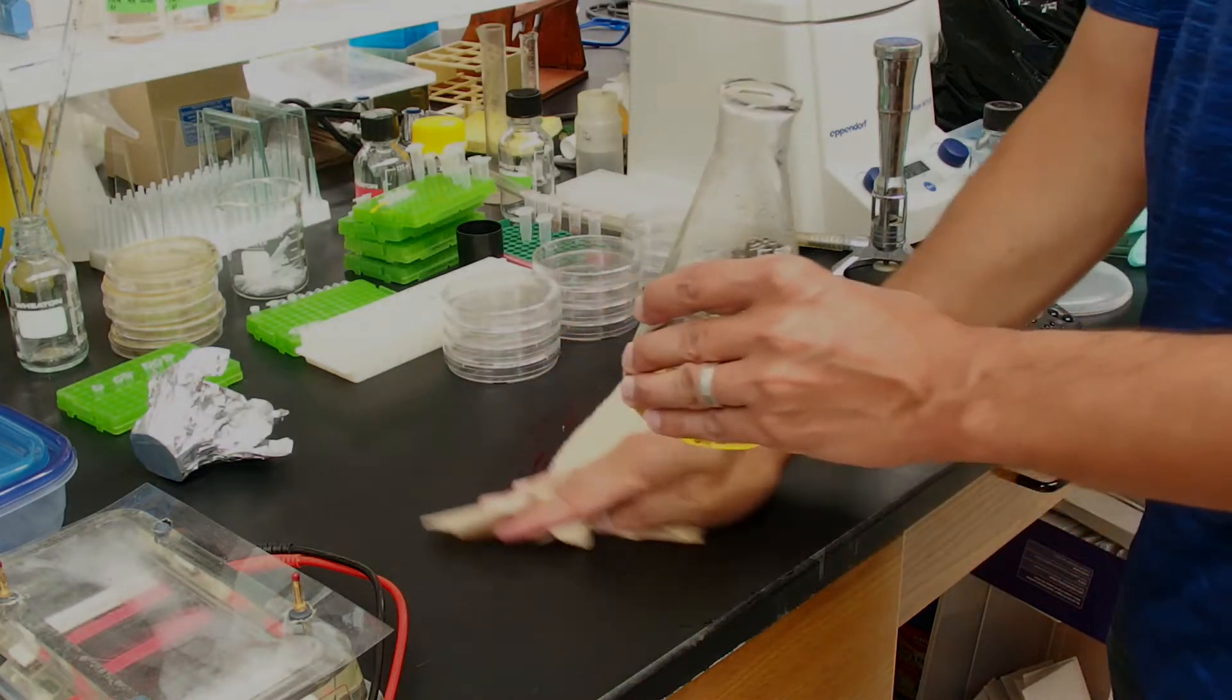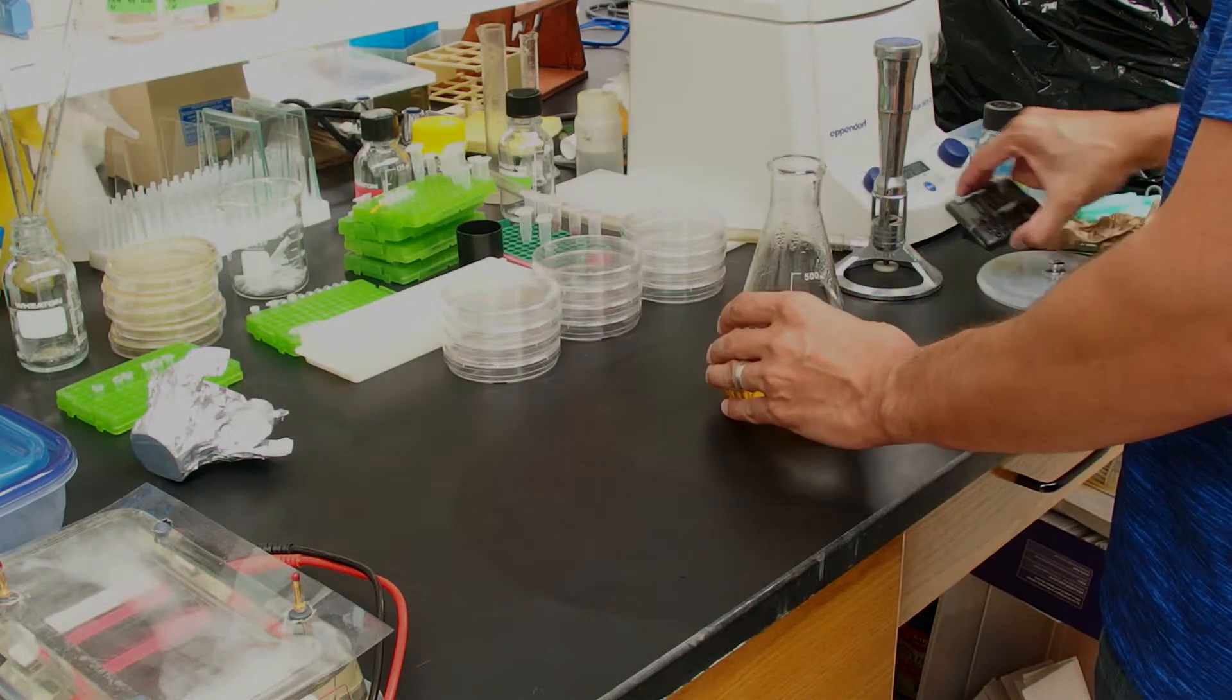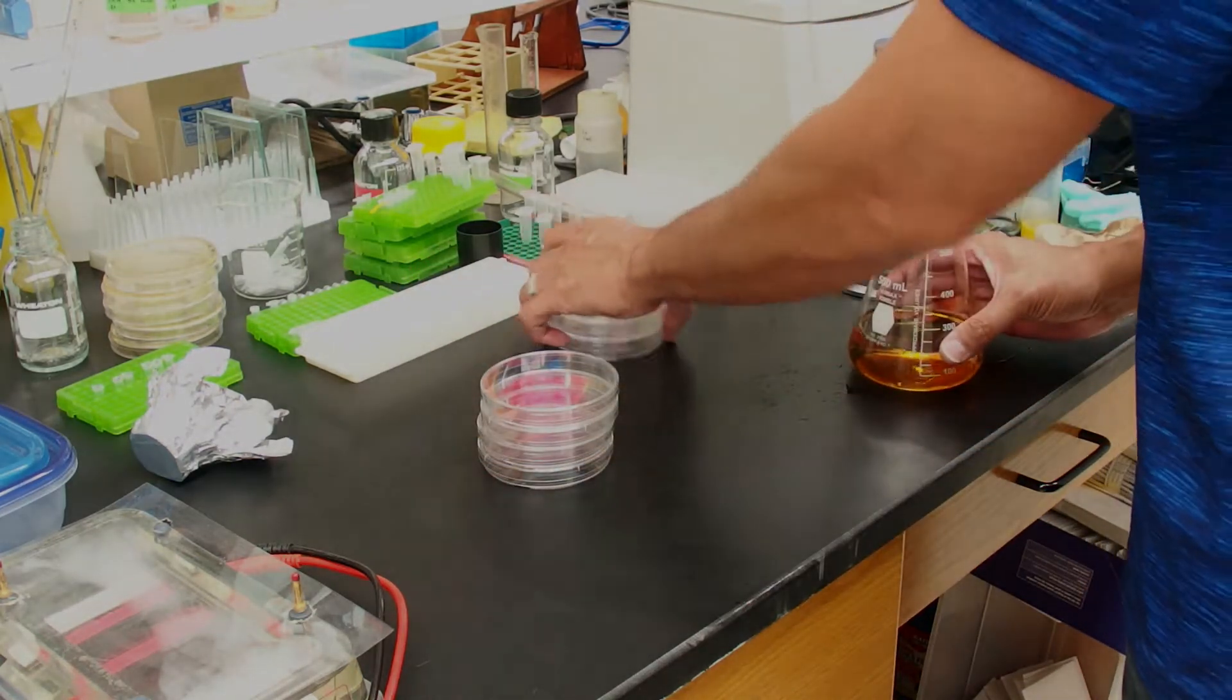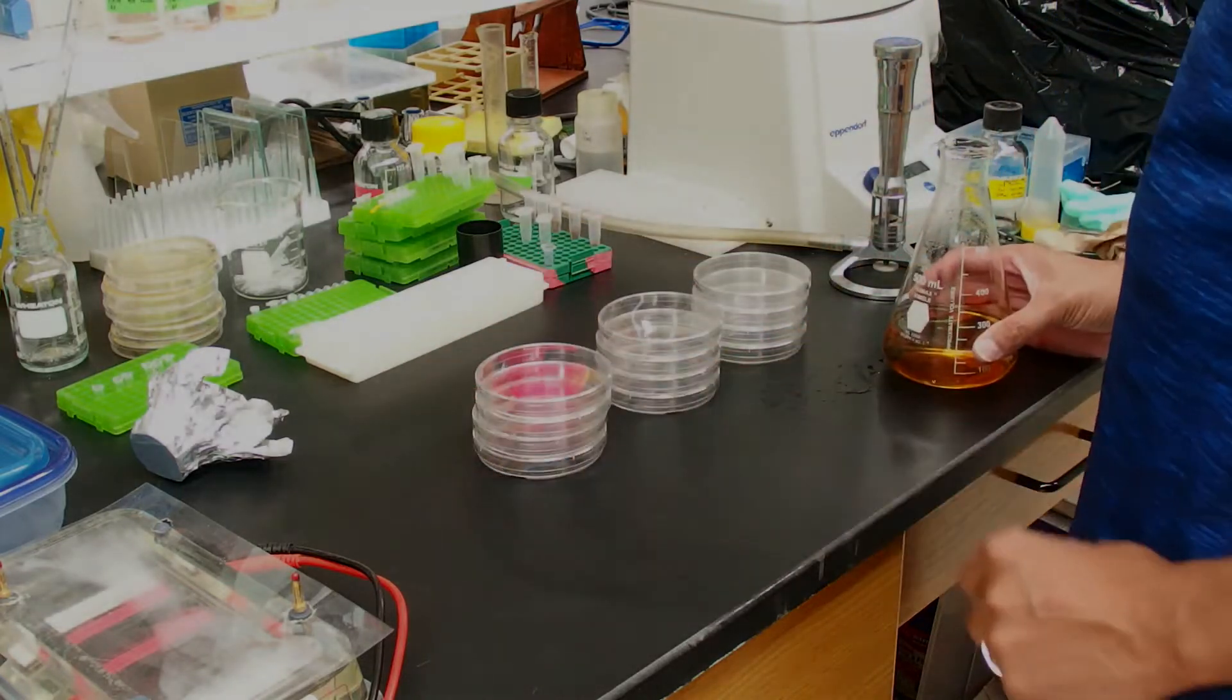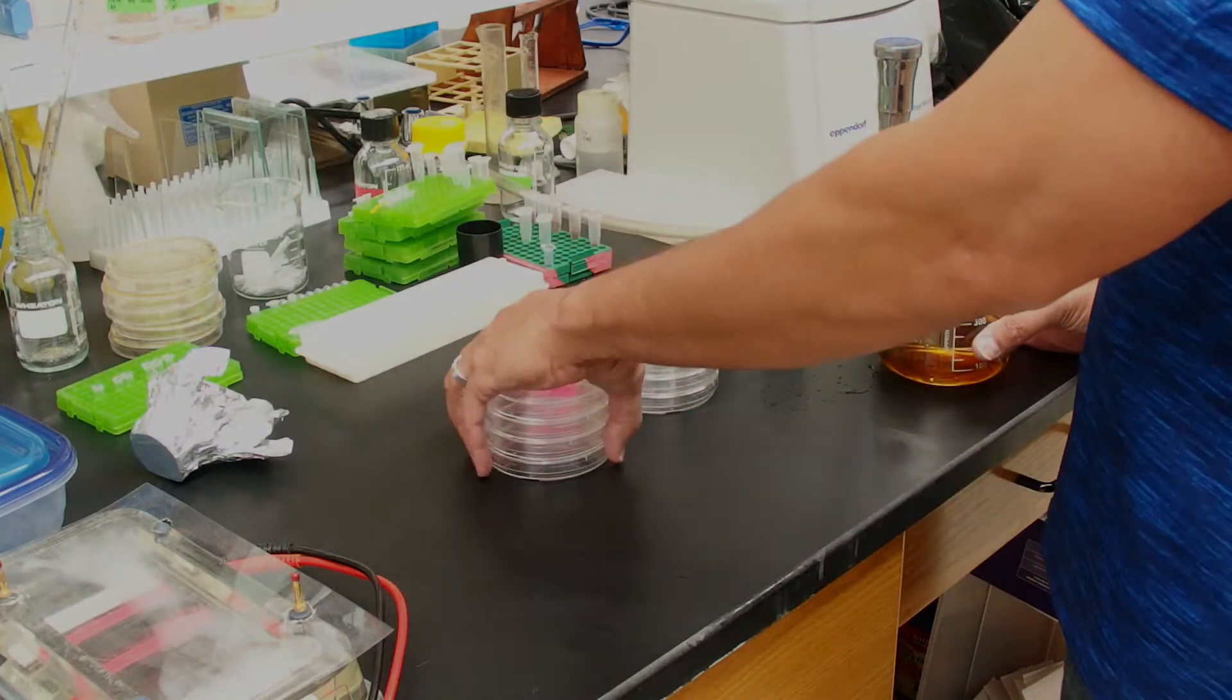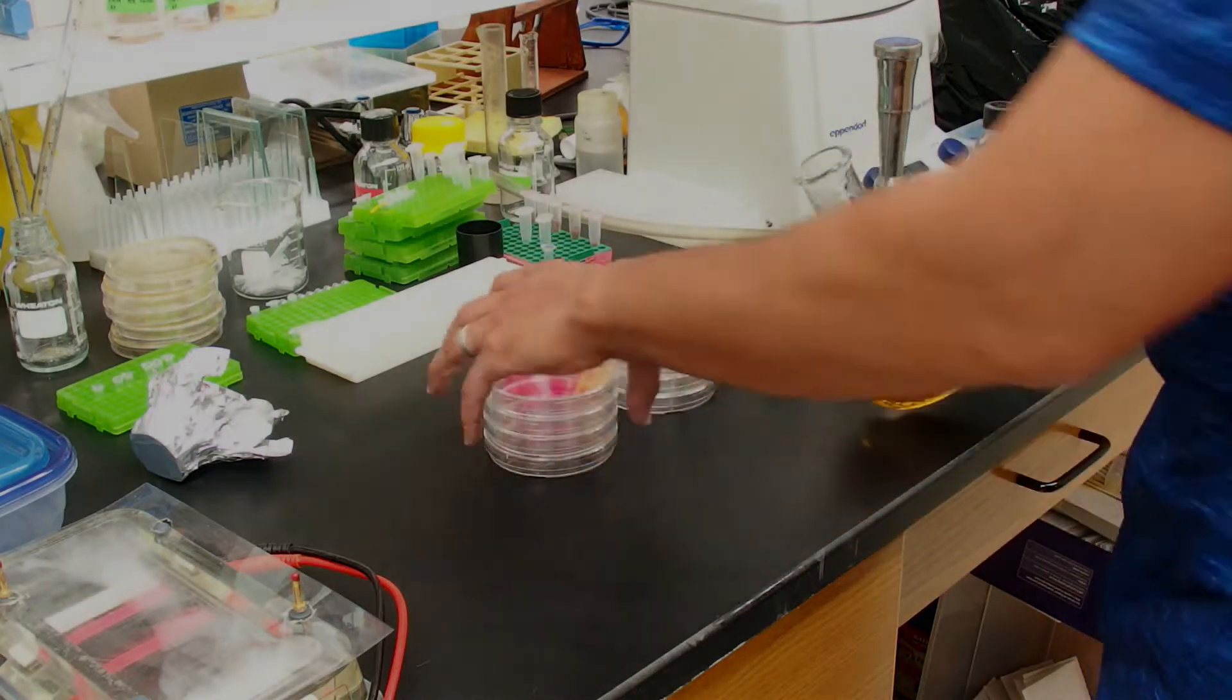You need approximately 20 milliliters of LB agar per plate. I usually pour my plates just a little bit less than 20 ml. So I'm going to try to get 12 plates here. What you want to do is you want to stack up your plates three or four high in nice, neat stacks. And the technique that we're going to do is we're going to lift and pour, and then lift and pour the next one. Let's go ahead and do that.